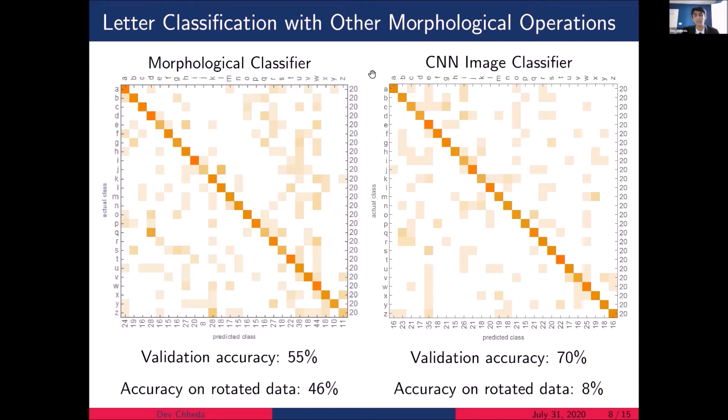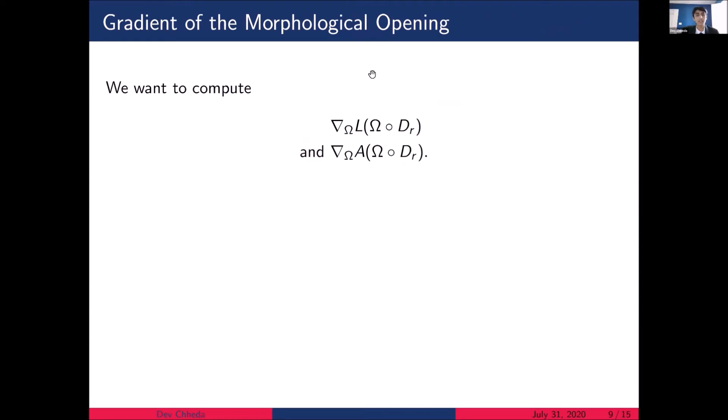So the next thing we might consider using the profile for is as a step in some nonlinear optimization. And in order to do this, we need to compute the gradient of the isoperimetric profile. More specifically, we want to compute the gradients of the perimeter and area of the morphological opening, since these are what define the profile. Recall from before that the opening is the composition of the erosion and dilation. And using the chain rule, we find that we can split up this gradient into computing the gradient of the dilation and erosion respectively. In our study, we focus on computing the gradient of the perimeter of the morphological dilation.